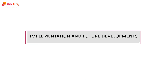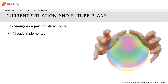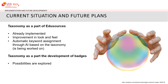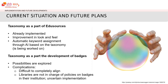Finally, a word about implementation and future plans. As I mentioned, the taxonomy has already been implemented and visual improvements will be made. In addition, there is a project investigating the automatic assignment of keywords based on the taxonomy using artificial intelligence. When it comes to the taxonomy as part of digital badges, we are still in the exploration phase. It's quite difficult to align all institutions, and libraries are not in charge of policies on badges in their institutions. All this makes it more complicated, but not impossible, and in any case we will continue our initiative.